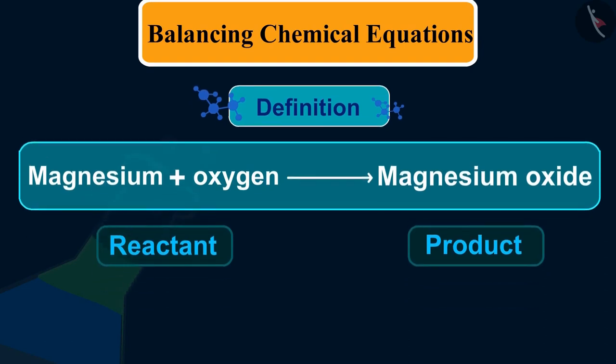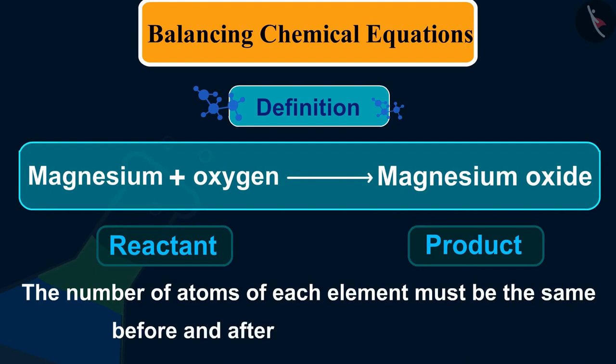That is, the total mass of the elements present in the products of a chemical reaction has to be equal to the total mass of the elements present in the reactants. It would not be wrong to say that mass is neither created nor destroyed in any chemical reaction.